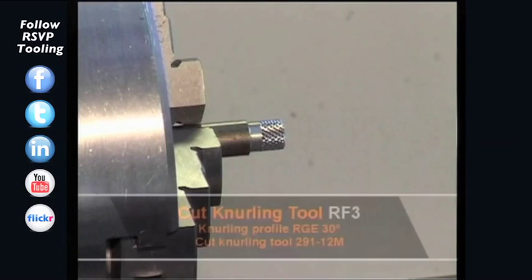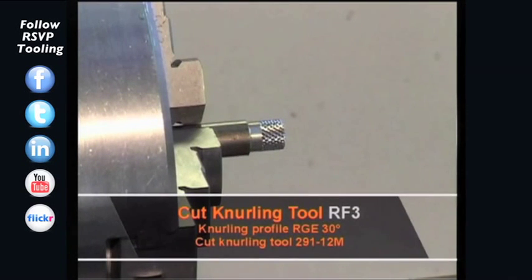We see in the picture the knurling profile RGE 30 degrees produced with the Zeus knurling tool 291-12M of the RF3 series.